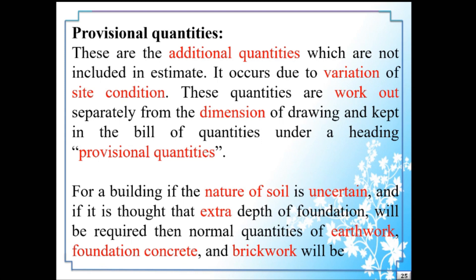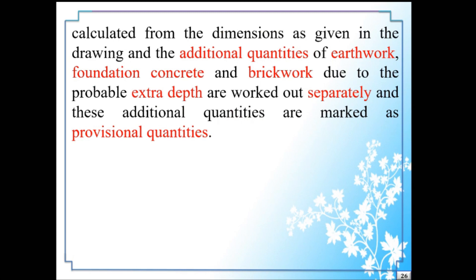For example, for a building if the nature of soil is uncertain and it is thought that extra depth of foundation will be required, then the normal quantities of earthwork, foundation concrete, and brickwork will be calculated from the dimensions as given in the drawing, and the additional quantities of earthwork, foundation concrete, and brickwork due to the probable extra depth are worked out separately. These additional quantities are marked as provisional quantities.